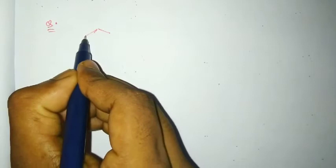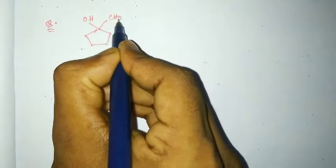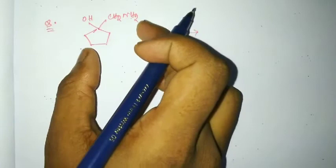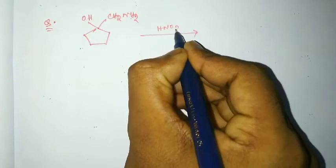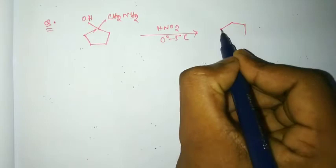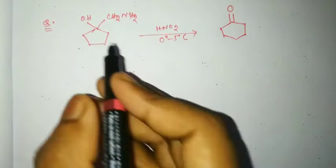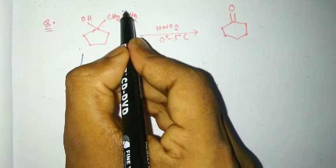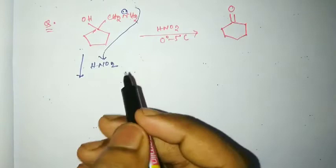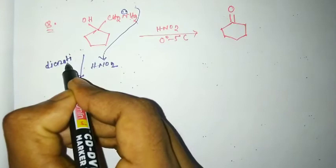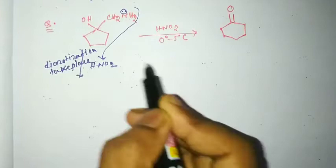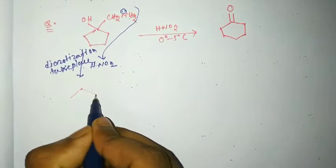Let us take another example of an amino alcohol. When treated with nitrous acid at 0 to 5 degrees Celsius, we get a carbonyl compound — that is cyclohexanone. Now see its mechanism: in the presence of nitrous acid, the NH2 group reacts and diazotization takes place, forming a diazonium salt.